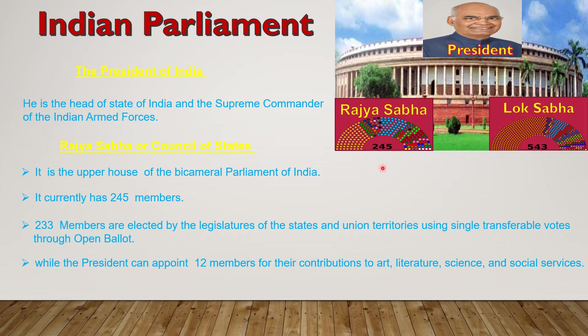About term, questions are repeatedly asked. Two questions are there where students make a mistake about the term. One is: what is the term of Rajya Sabha? And the second is: what is the term of the member of Rajya Sabha? Both answers are different. The term of Rajya Sabha is permanent. The term of a member of Rajya Sabha is 6 years.